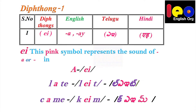Sometimes if a word ends in A-Y, that also sounds like A. For example, D-A-Y — not 'day', but 'dei'. So this symbol stands for the sound EI.